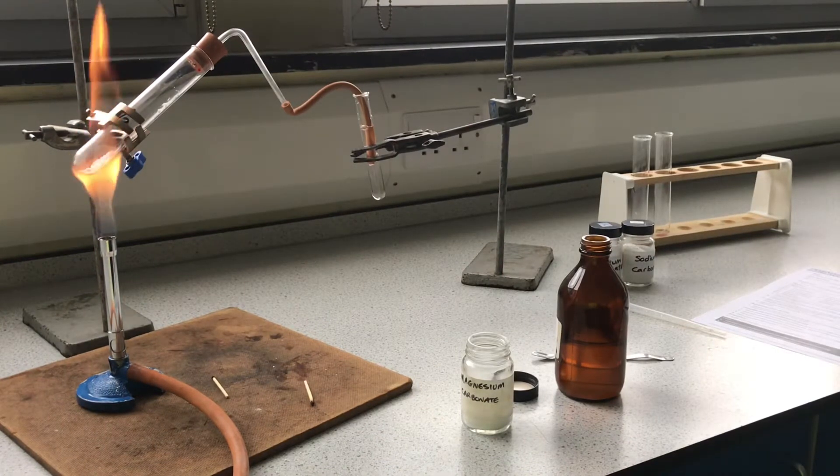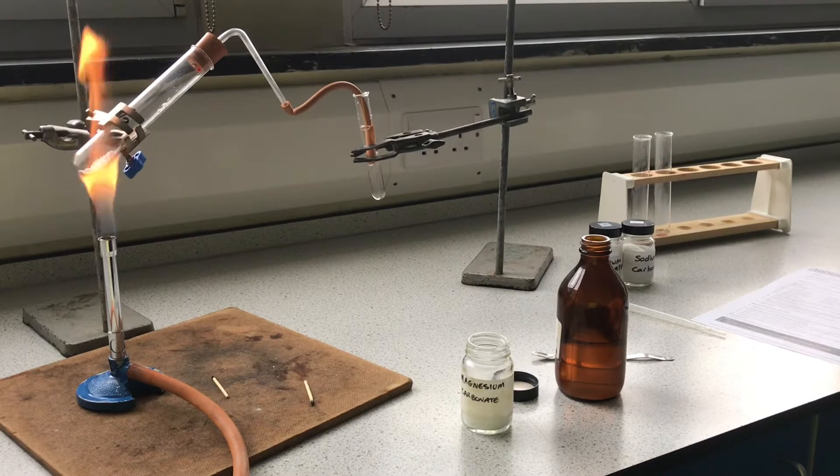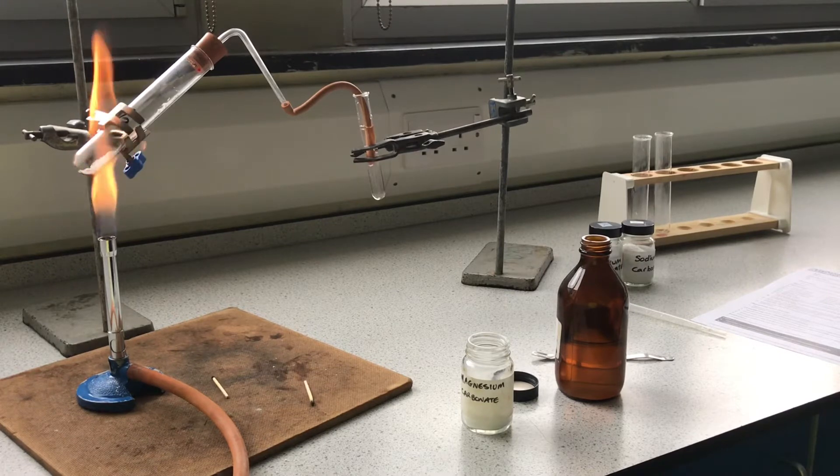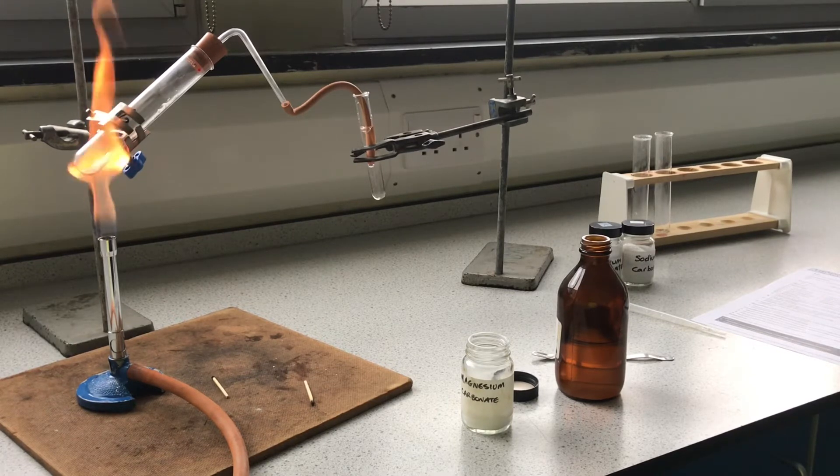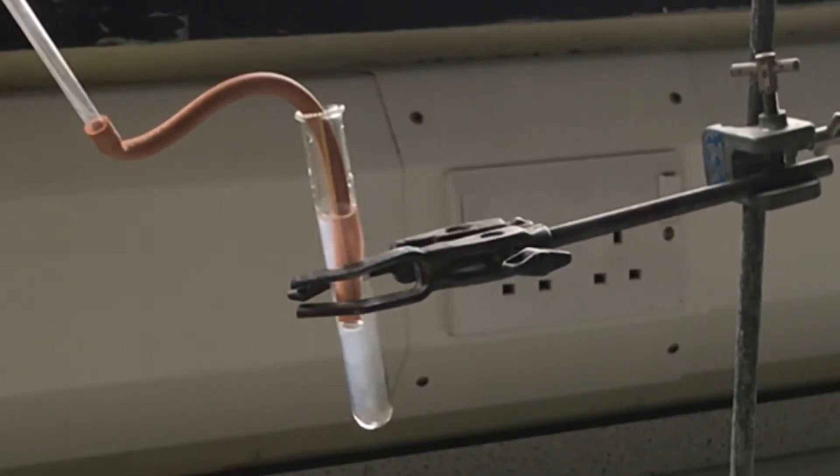We can see bubbles are being produced. The lime water is changing color from colorless to cloudy. This indicates the gas being produced is carbon dioxide.